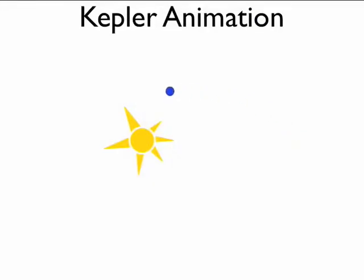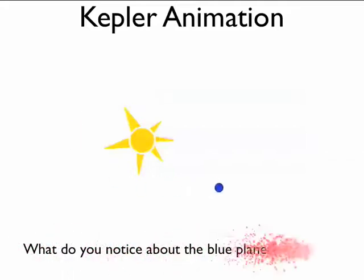If you look at this animation on the second law, you'll notice something about the blue planet going around the star. It goes faster when it gets closer. That's not the second law, but that's a result of the second law—that it goes faster when it gets closer to the object that it's orbiting.